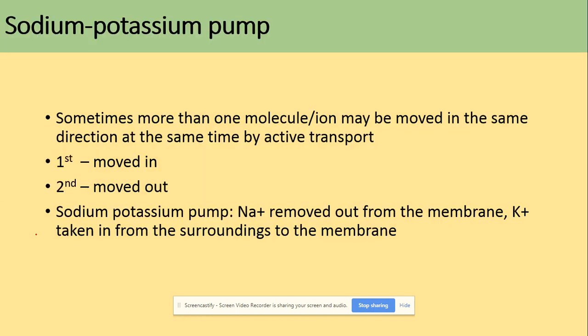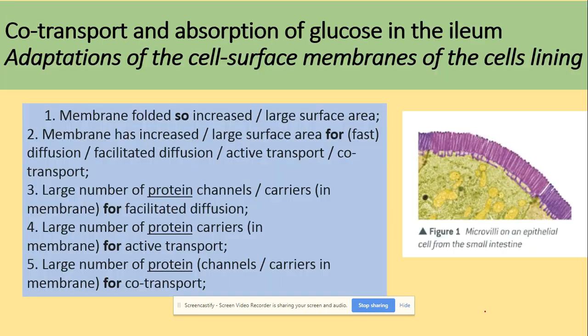One example of active transport is the sodium-potassium pump, where one type of molecule is moved in while another is moved out. The sodium-potassium pump removes three sodium ions out from the membrane and takes two potassium ions in.